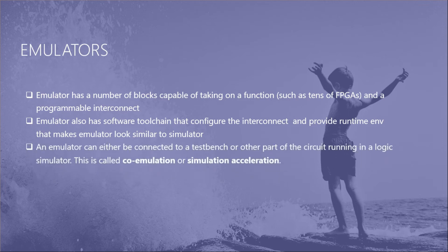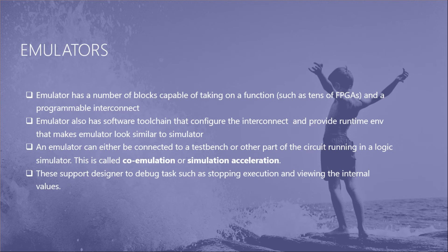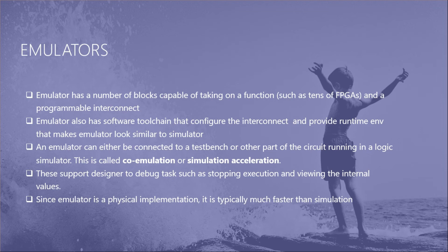An emulator can be connected to a test bench to provide inputs, or to another part of the circuit running in a logic simulator. This is called co-emulation, where the simulation is accelerated by hardware — also called simulation acceleration. These setups support the designer in debug tasks such as stopping execution and viewing internal values, which correspond exactly to controllability and observability.